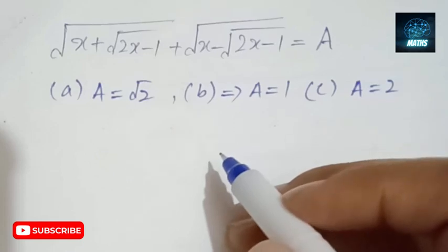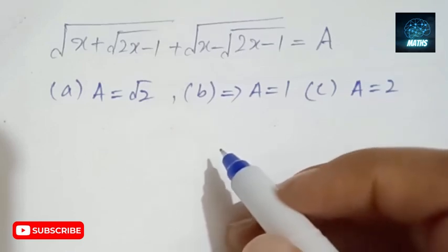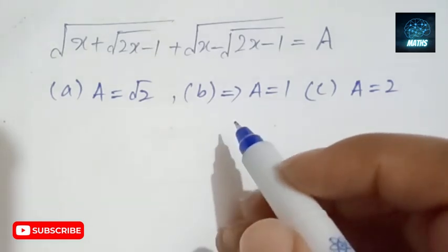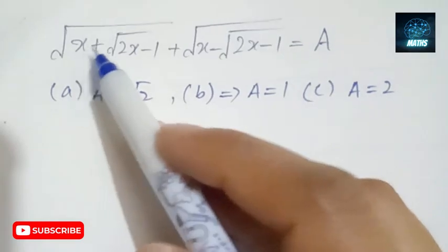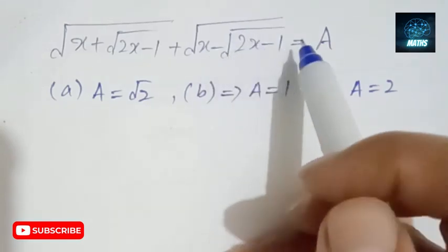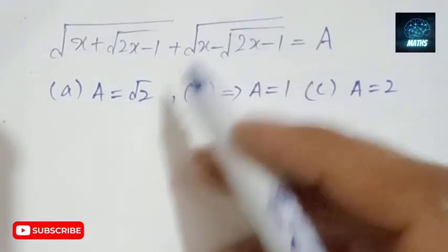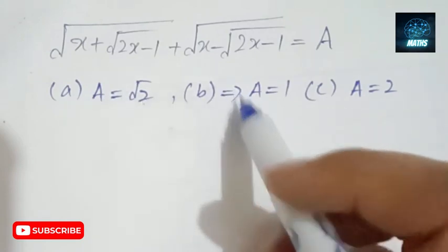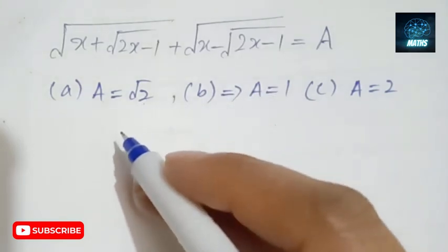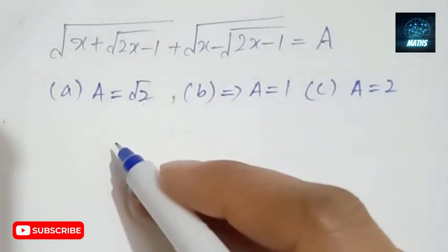This is a very nice algebraic equation from the International Mathematical Olympiad. We have to prove for what real values of x the expression square root of x plus square root of 2x minus 1, plus square root of x minus 2x times square root of 2x minus 1, equals a, for a equals square root of 2, a equals 1, and a equals 2. Only non-negative real numbers are admitted for the square roots.